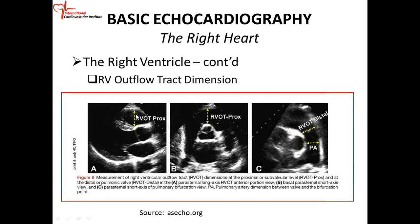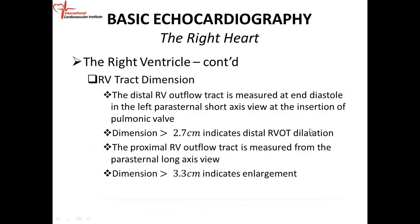For the proximal right ventricular outflow tract, anything greater than 3.3 centimeters suggests enlargement. For the distal right ventricular outflow tract — just above the pulmonic valve — anything greater than 2.7 centimeters suggests enlargement.